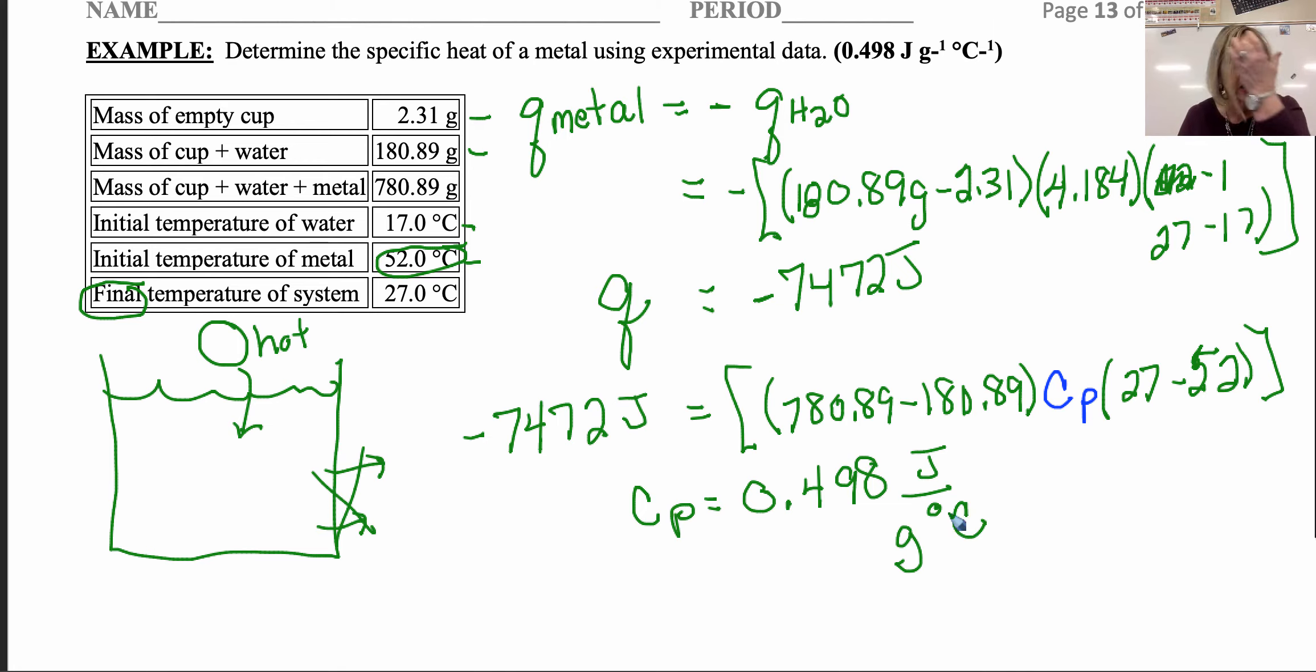You've always got to watch those units. So if this is grams and this is joules per gram degrees Celsius, and this is degrees Celsius, it cancels to give us the joules. So watch those units.